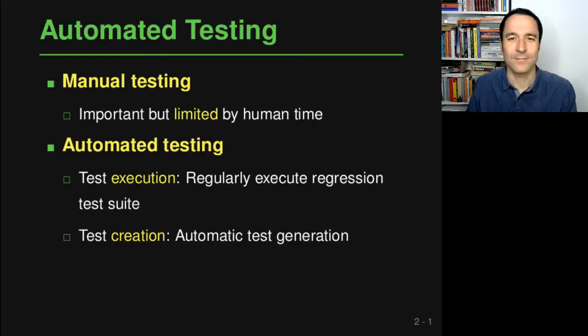Hi, hello and welcome back to the program analysis course. In this lecture we will talk about random testing and fuzzing, which are techniques to automatically test a program. The two terms random testing and fuzzing mean more or less the same and I will use them interchangeably. Let's get started with the question what automated testing actually is and why we need it.